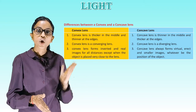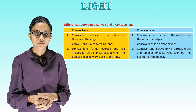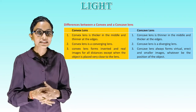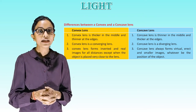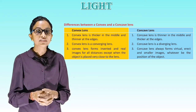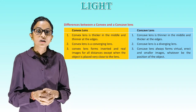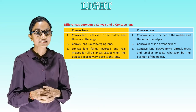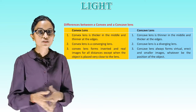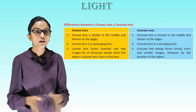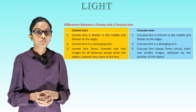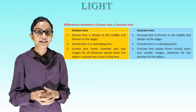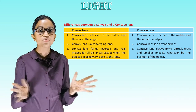Difference between a convex and a concave lens: a convex lens is thicker in the middle and thinner at the edges; a concave lens is thinner in the middle and thicker at the edges. A convex lens is a converging lens; a concave lens is a diverging lens. A convex lens forms inverted and real images for all distances except when the object is placed very close to the lens. A concave lens always forms virtual, erect and smaller images whatever the position of the object.